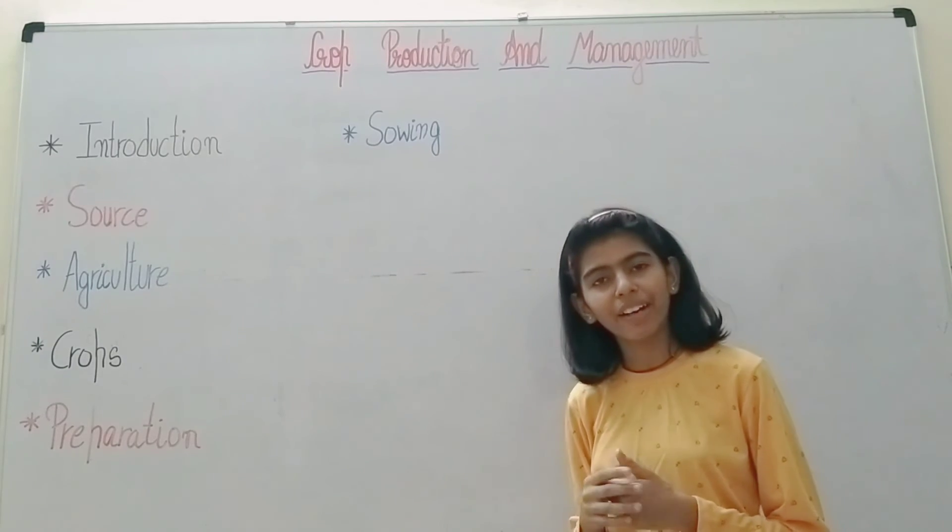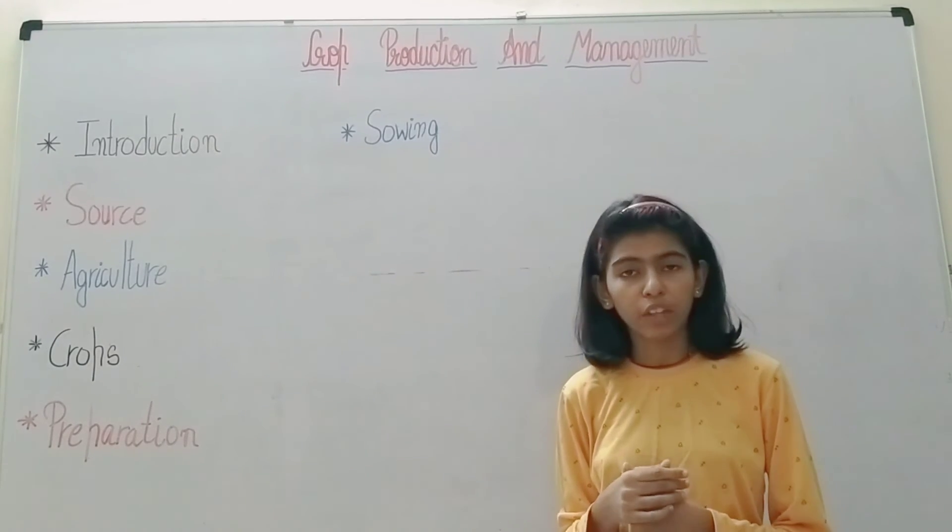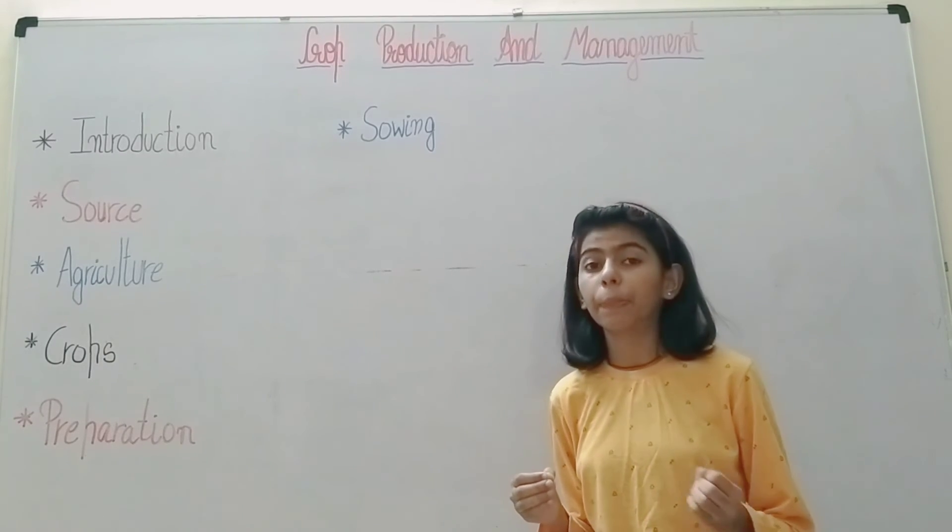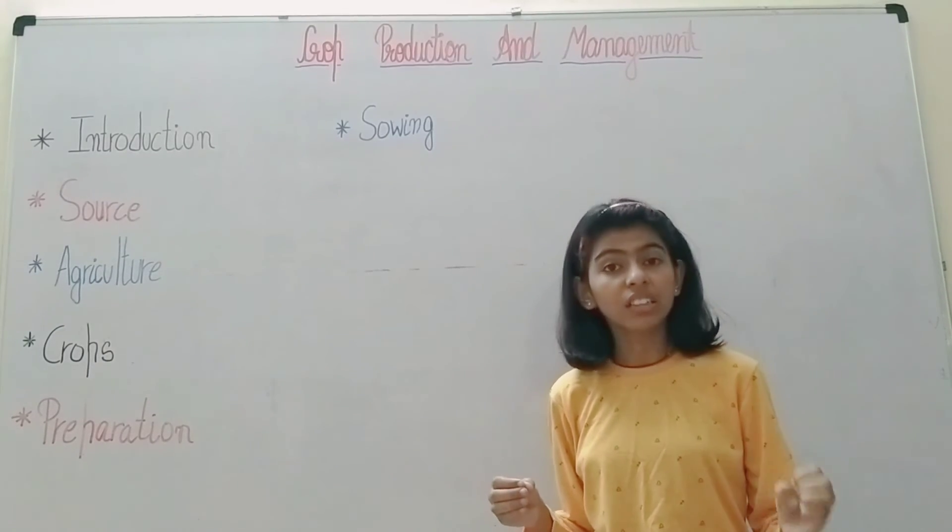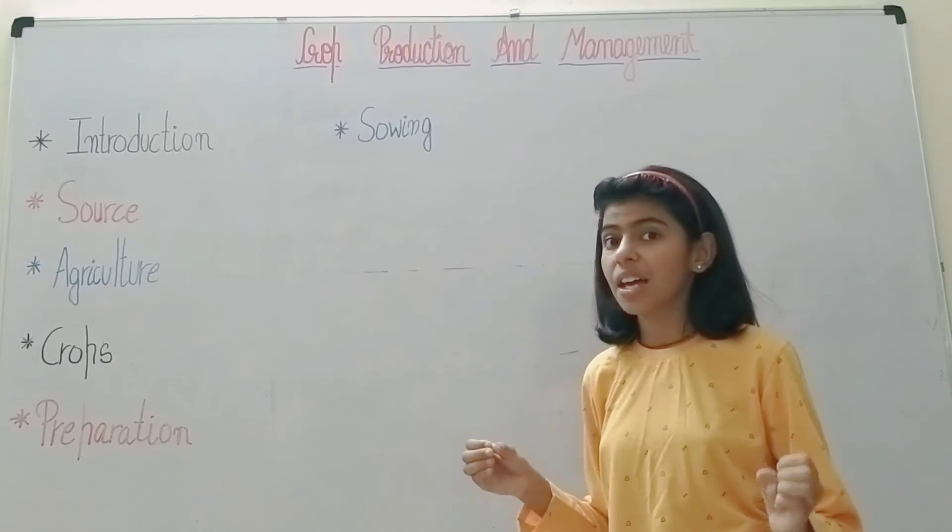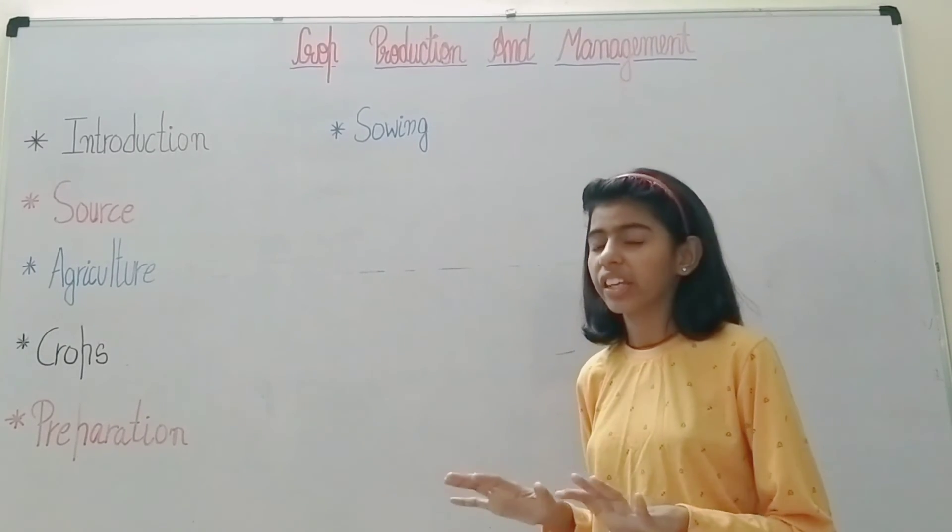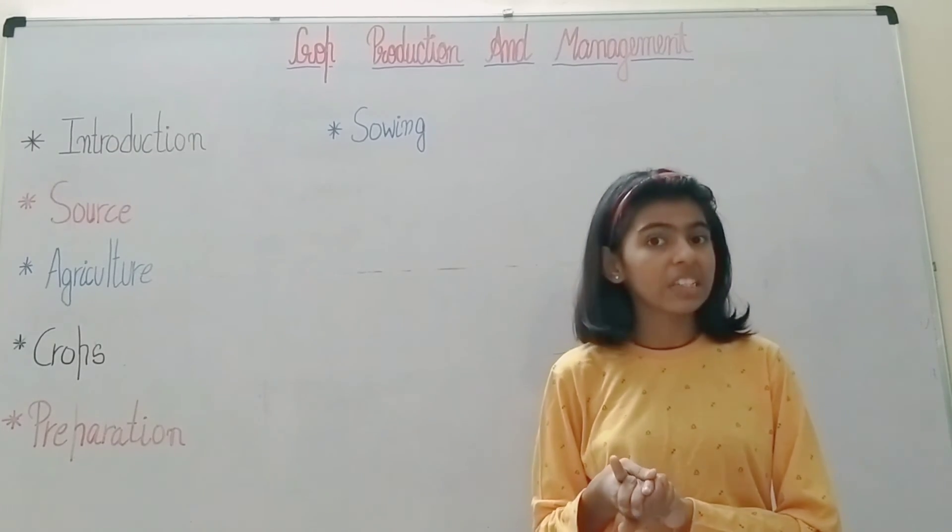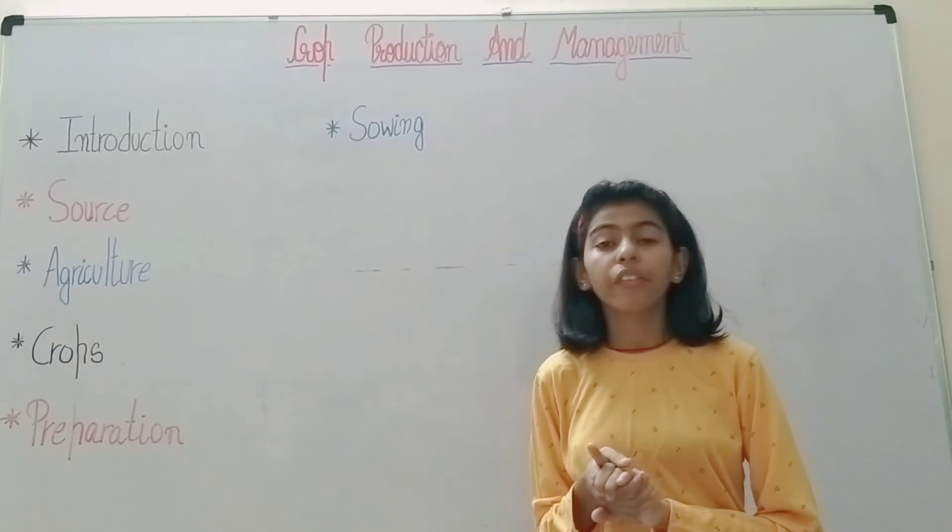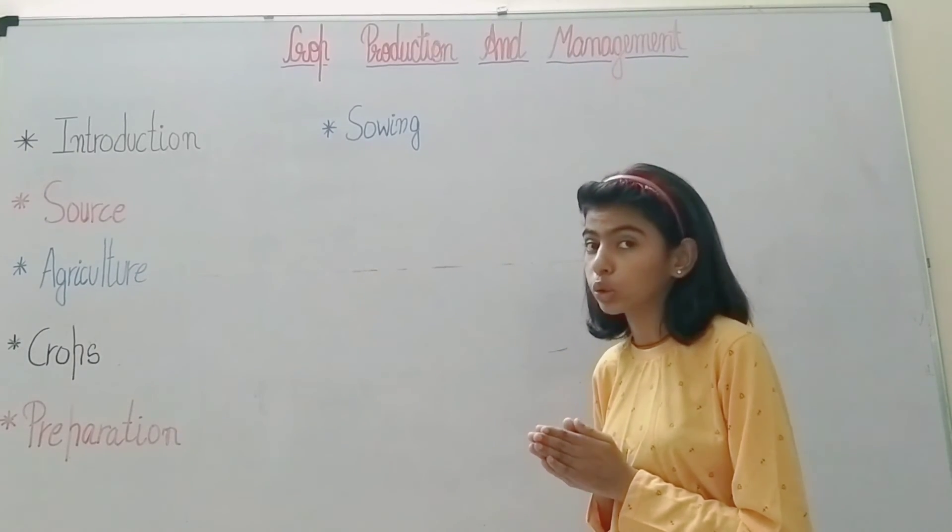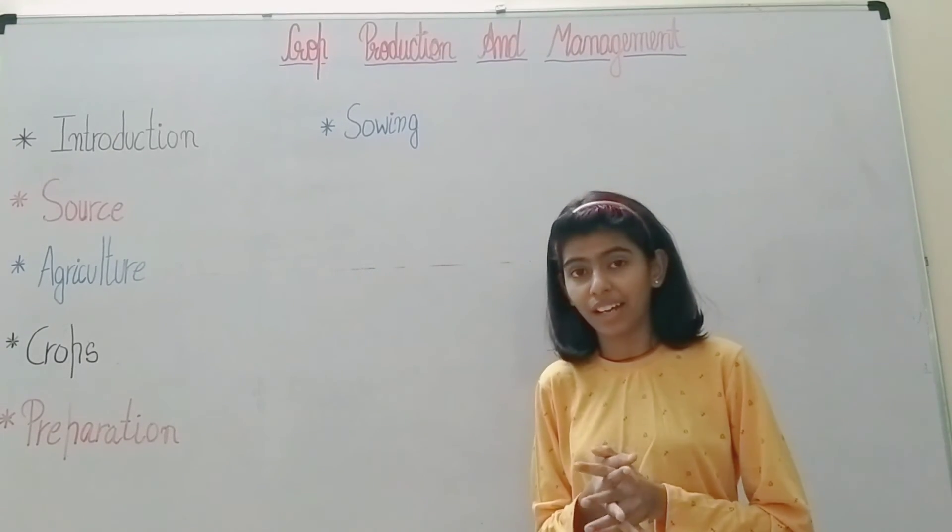What are the disadvantages of manual sowing? Some parts of land are uncovered by seeds, and some parts are highly concentrated with seeds. This causes wastage of land. If seeds are grown too close or too far apart, it is a waste of land.